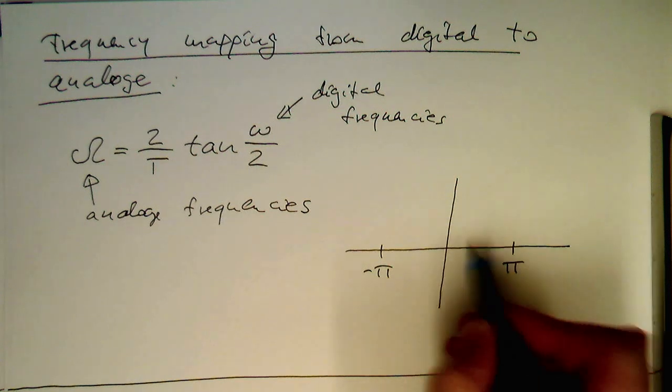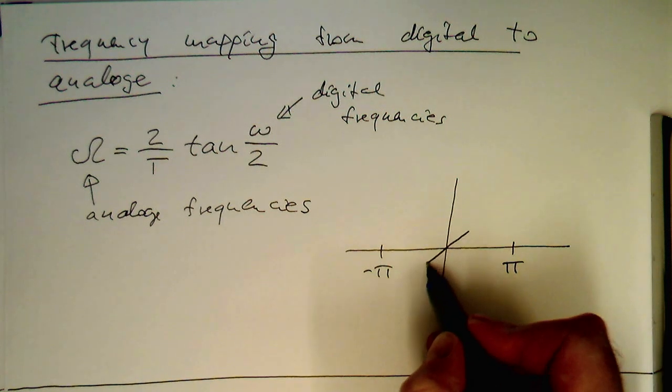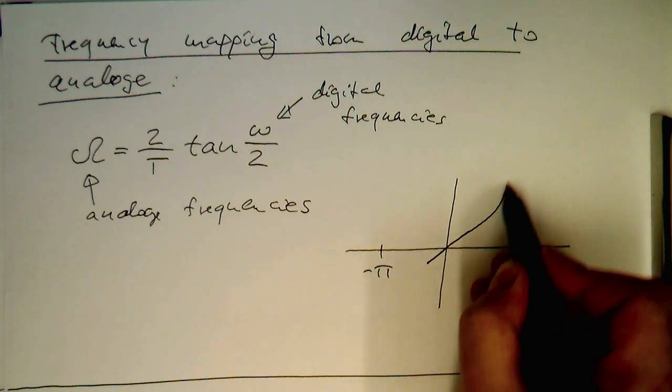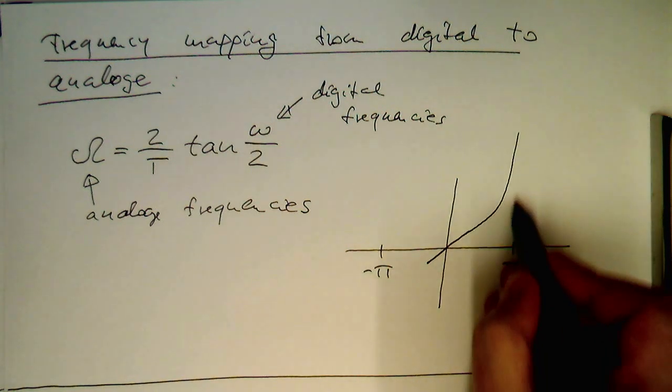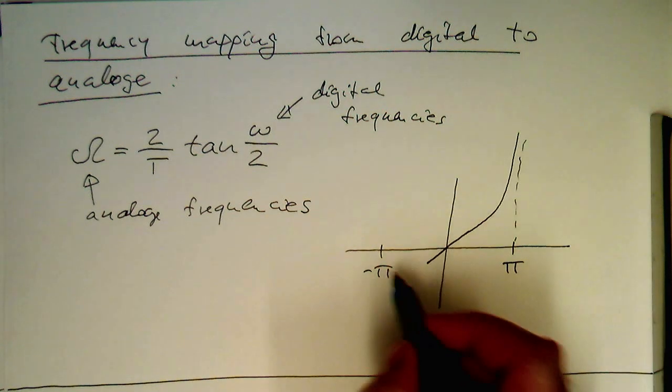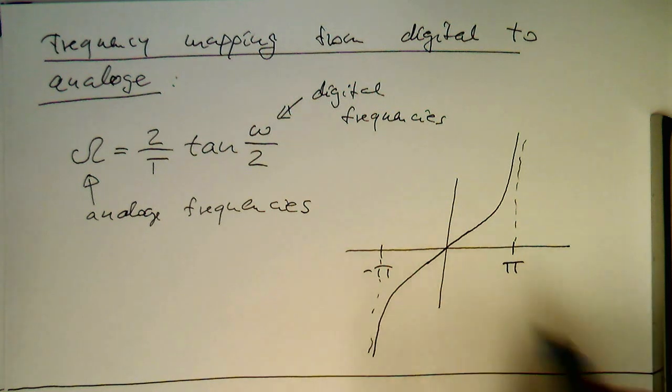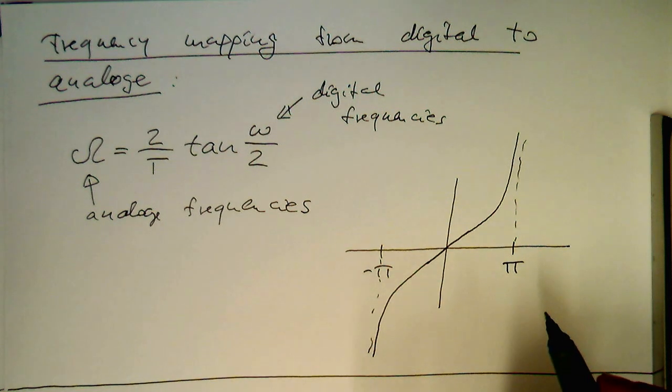So this means that in the middle here we have a linear relationship here. And then this goes straight up here when this is approaching pi. And then there's the same idea here.